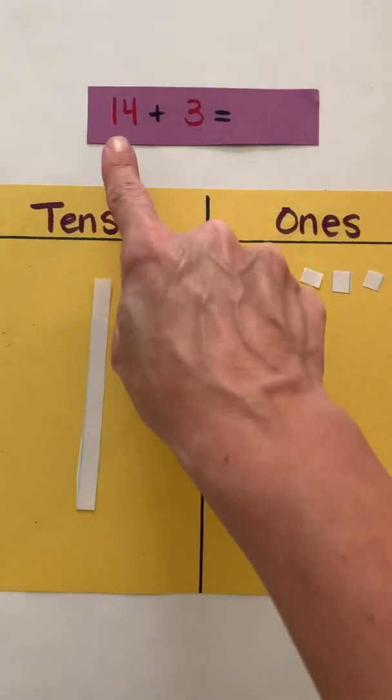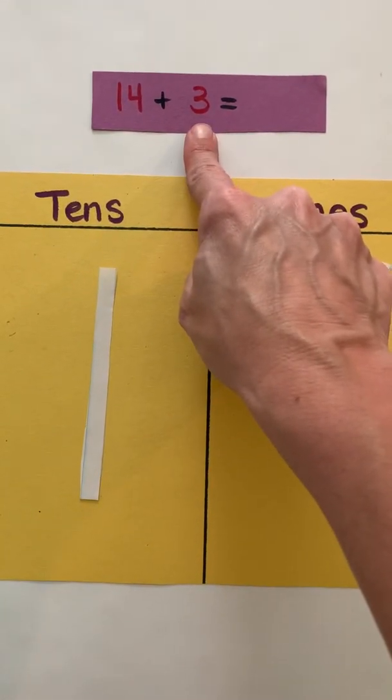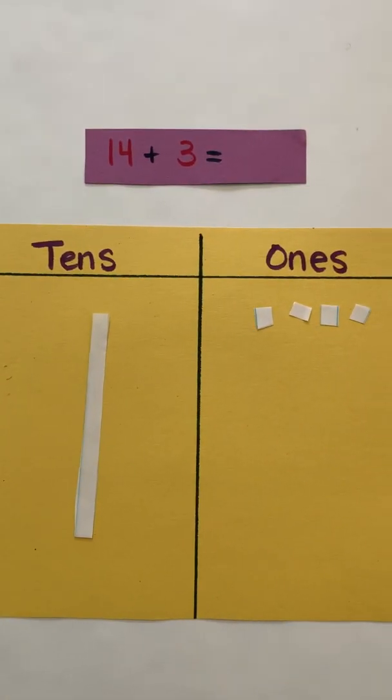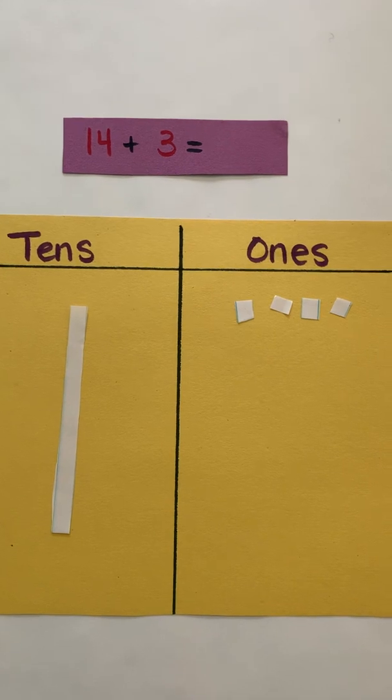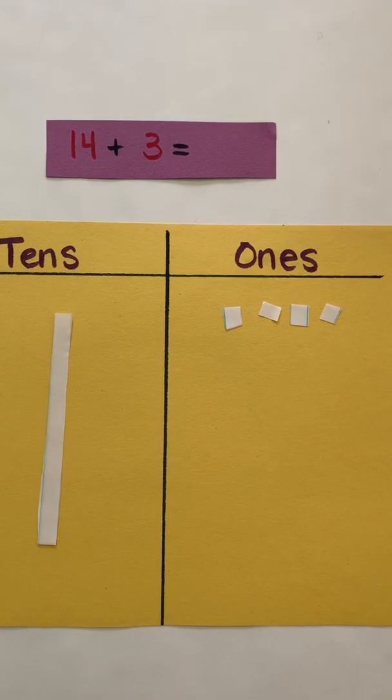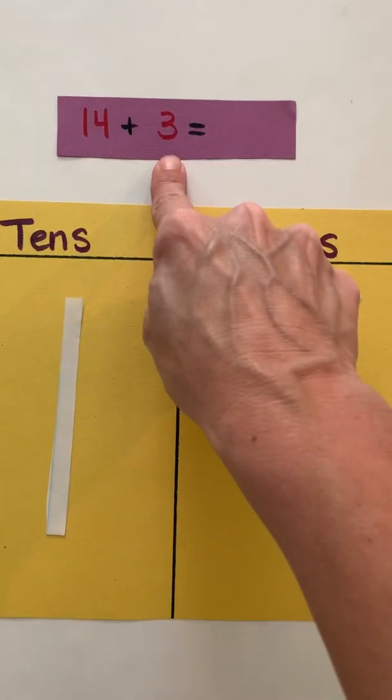This video will focus on adding a two-digit addend plus a one-digit addend to get the sum. Earlier this year in first grade you worked on adding a one-digit addend plus a one-digit addend to get the sum. Now we are going to go a little bit deeper with a two-digit addend plus a one-digit addend.